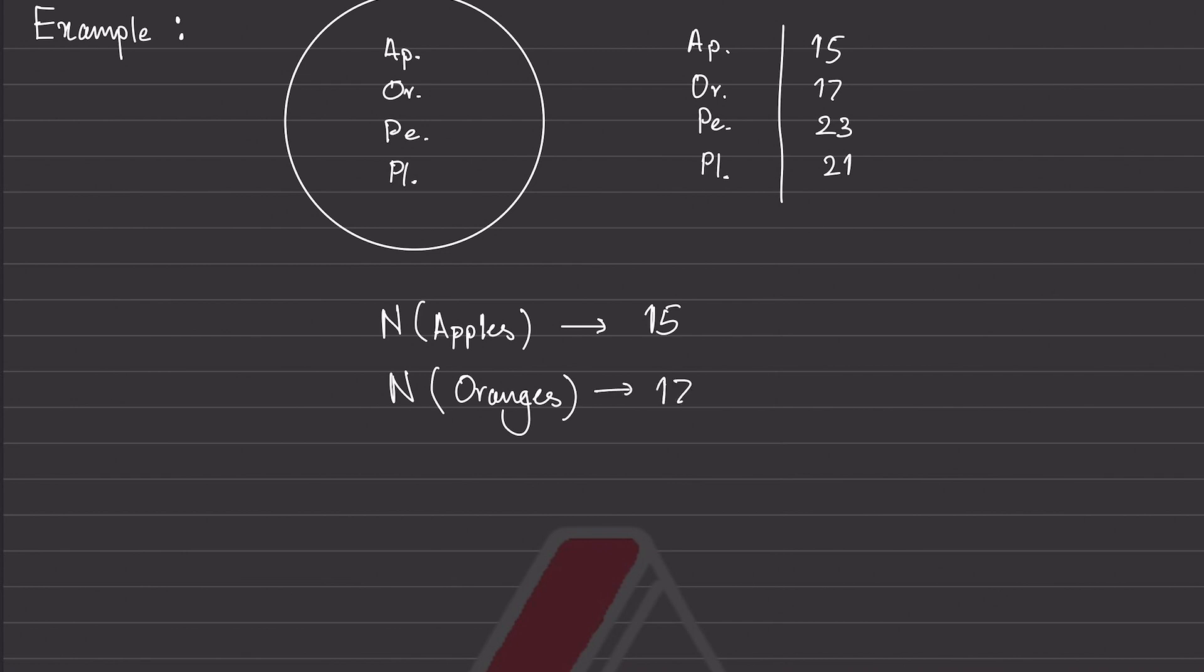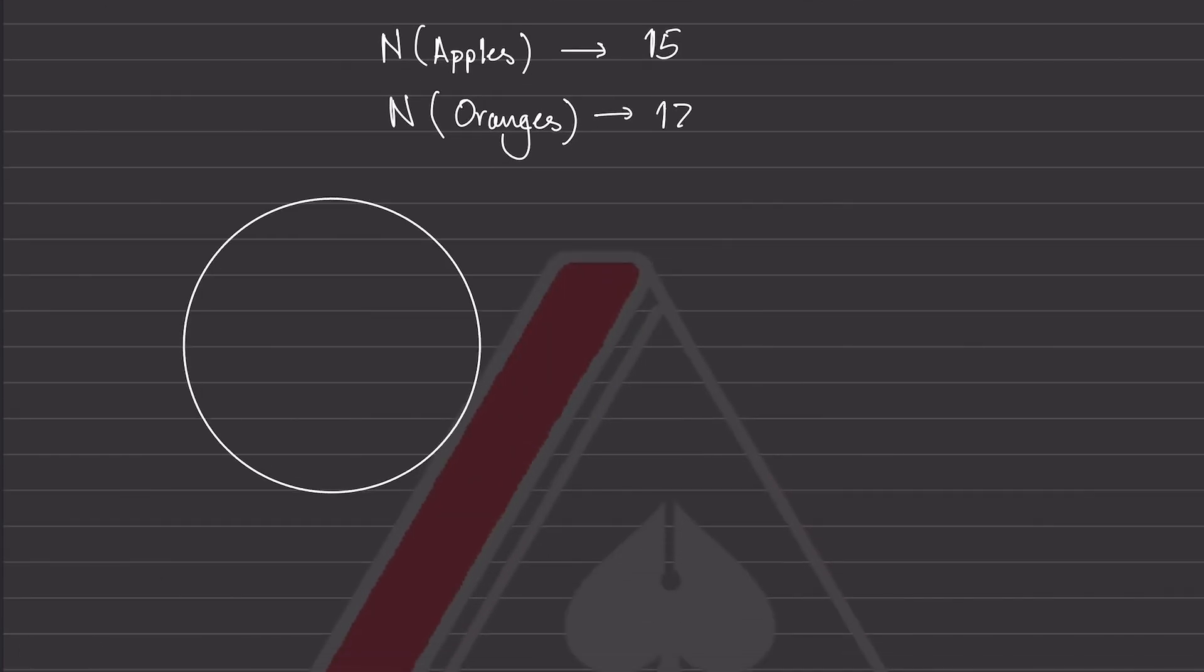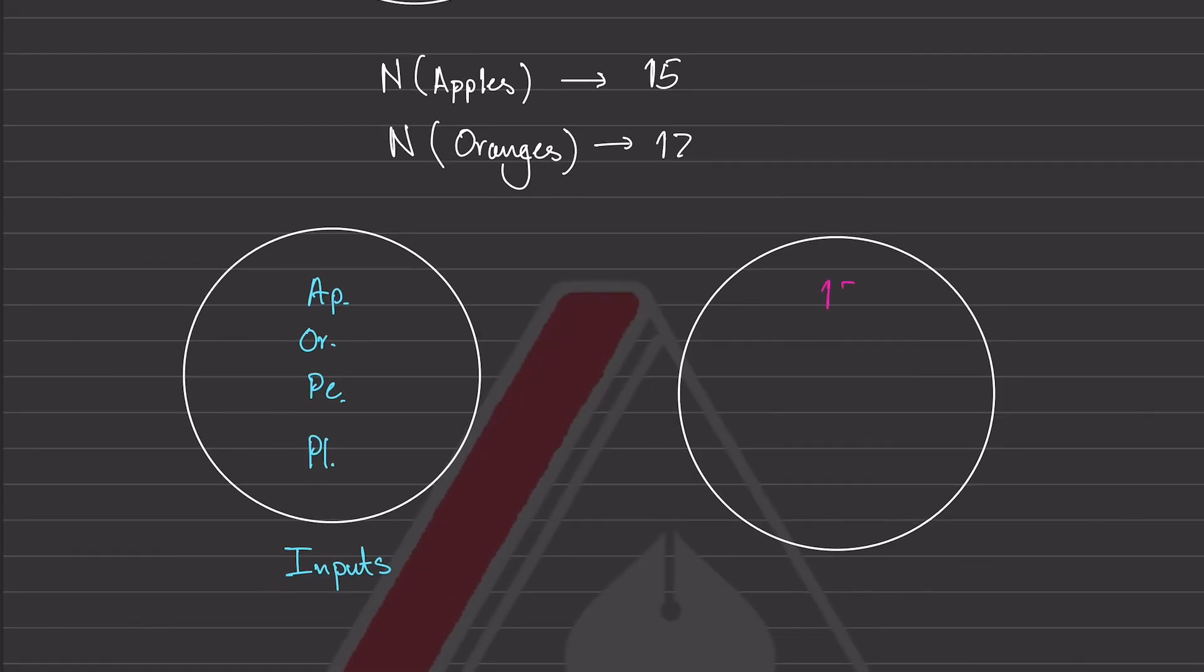If you were to visualize this, this would be like the basket of inputs, right? Say these are all my inputs. Let's do that in a different color. These are all my inputs, and we have apples, oranges, peaches, plums. And all of these inputs relate to their own outputs, which are 15, 17, 23, and 21. Whenever we apply the function n on apples, we always get to the output of 15. We do that with oranges, we get 17. These are my set of outputs. If we apply for peaches, we get 23, right?